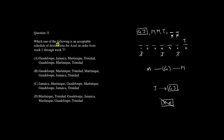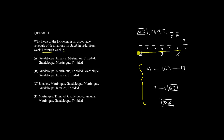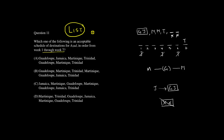The first question asks: which one of the following is an acceptable schedule of destinations for Azad from week one to week seven? This kind of question is what I call a list question. To answer a list question, we don't look at each answer choice and check if it works individually — the better approach is to use each rule to eliminate answer choices that violate it.